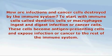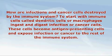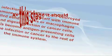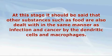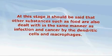How are infections and cancer cells destroyed by the immune system? There are cells called dendritic cells or macrophages which eat or ingest infection and cancer. Digestion — the breaking down of the infection or cancer — follows ingestion. Parts of the digested infection or cancer are then exposed to the rest of the immune system by dendritic cells or macrophages, which are then called antigen presenting cells. These present the digested material, now known as an antigen, as MHC — major histocompatibility complexes — on their cell wall. It should be noted that other substances such as food are also dealt with in the same manner by dendritic cells and macrophages.